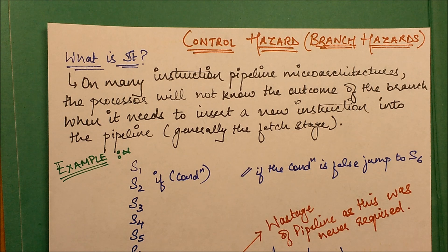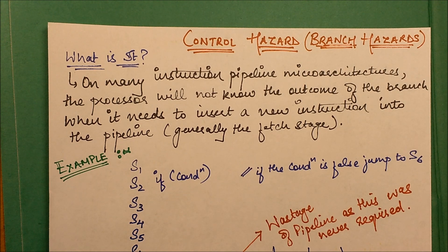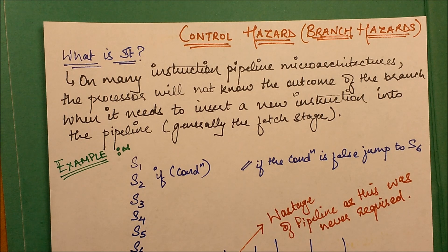We'll discuss this with the help of an example and you'll get more clarity. Let's say this is the example - you have six instructions over here and in the second instruction it is if condition. How do we start processing this?